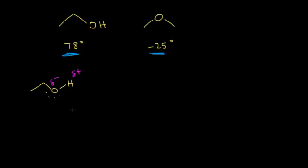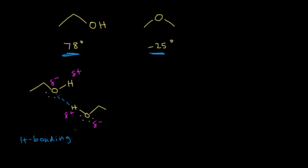And the hydrogen is partially positive as it loses some electron density. If that molecule of ethanol interacts with another molecule of ethanol, the second molecule of ethanol is also polarized. The oxygen is partially negative and the hydrogen is partially positive. And we know that opposite charges attract. So the partially positively charged hydrogen is attracted to the partially negatively charged oxygen. There's going to be attraction between those two molecules, and we call this intermolecular force hydrogen bonding — the strongest type of intermolecular force.